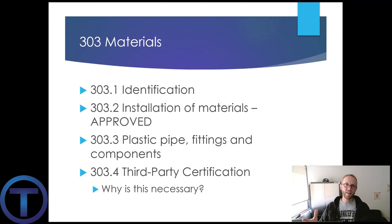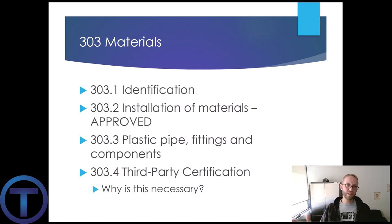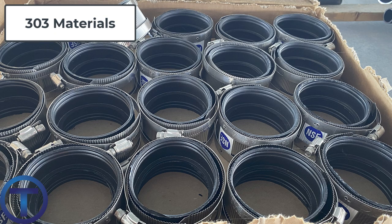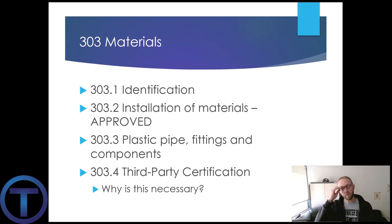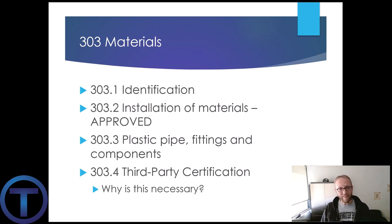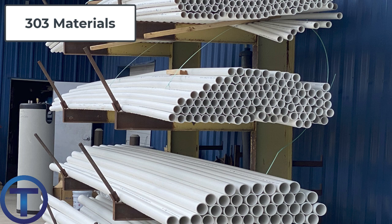303.1: materials have to have identification — meaning the manufacturer's markings and referenced standards so they can prove it's a quality piece and it's approved for installation. They have to be approved for us to install them at all. And we are also required by 303.2 to follow the manufacturer's installation instructions — we need to install things the way they were designed to be installed. 303.3: plastic pipe, fittings, etc., require third-party certification, same as 303.4.